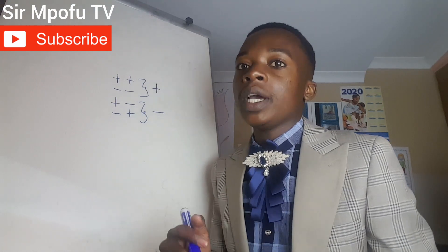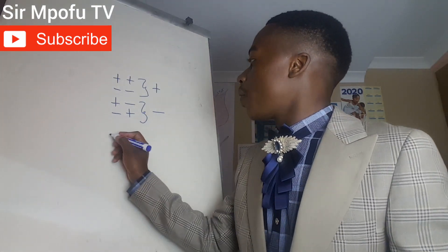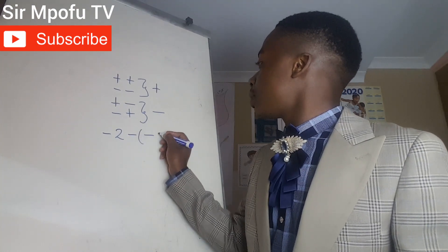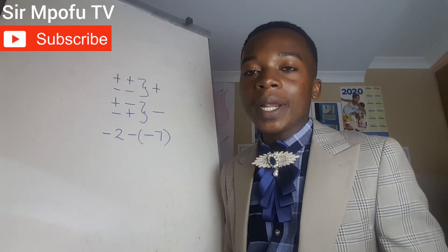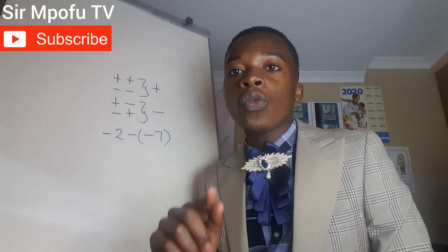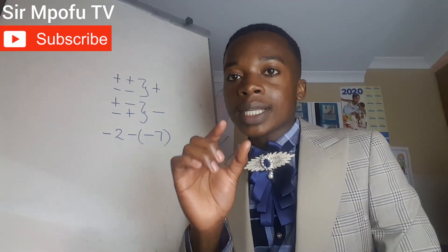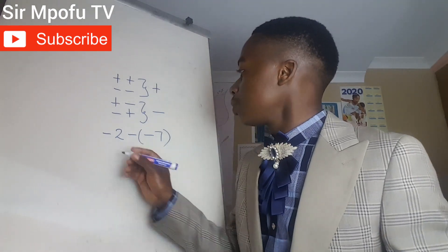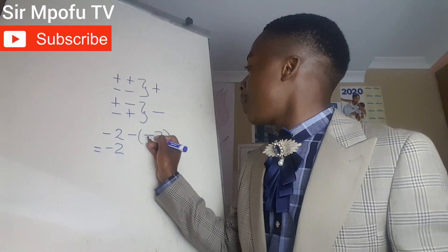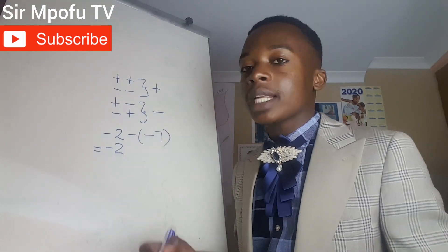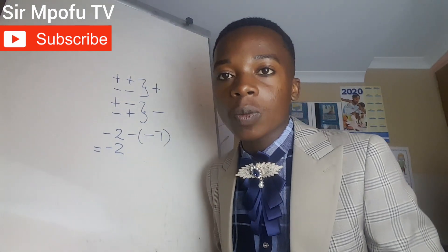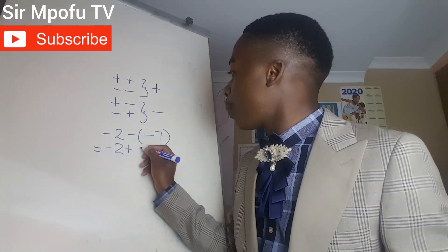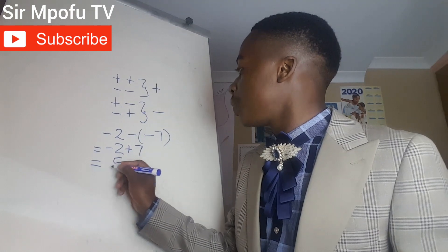Let's do an example. Let's say we've got negative 2 minus negative 7. The first thing is to solve the middle signs — the signs that are next to each other in the middle — and then solve as usual. So it's going to be minus 2, and then plus and plus. Signs next to each other means they are multiplying each other, so minus times minus gives us a positive. Our final answer is going to be 5.